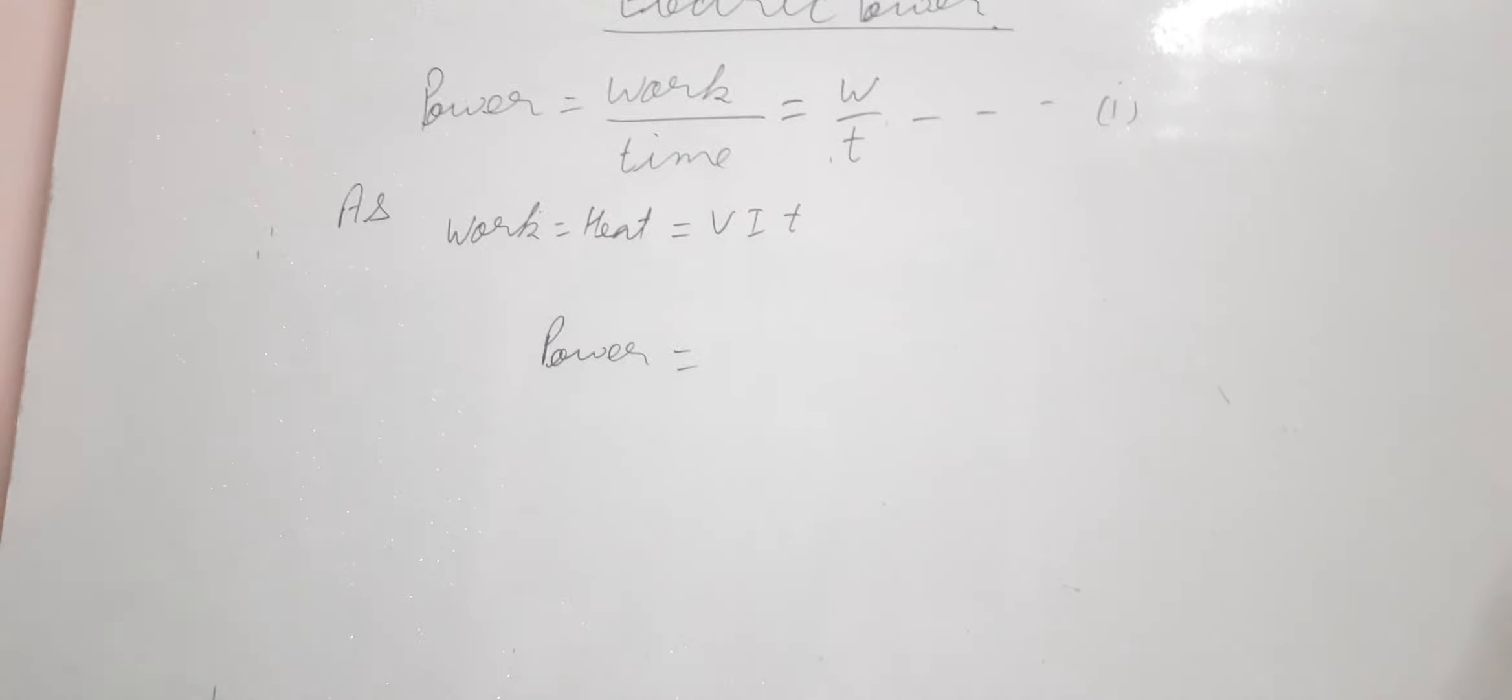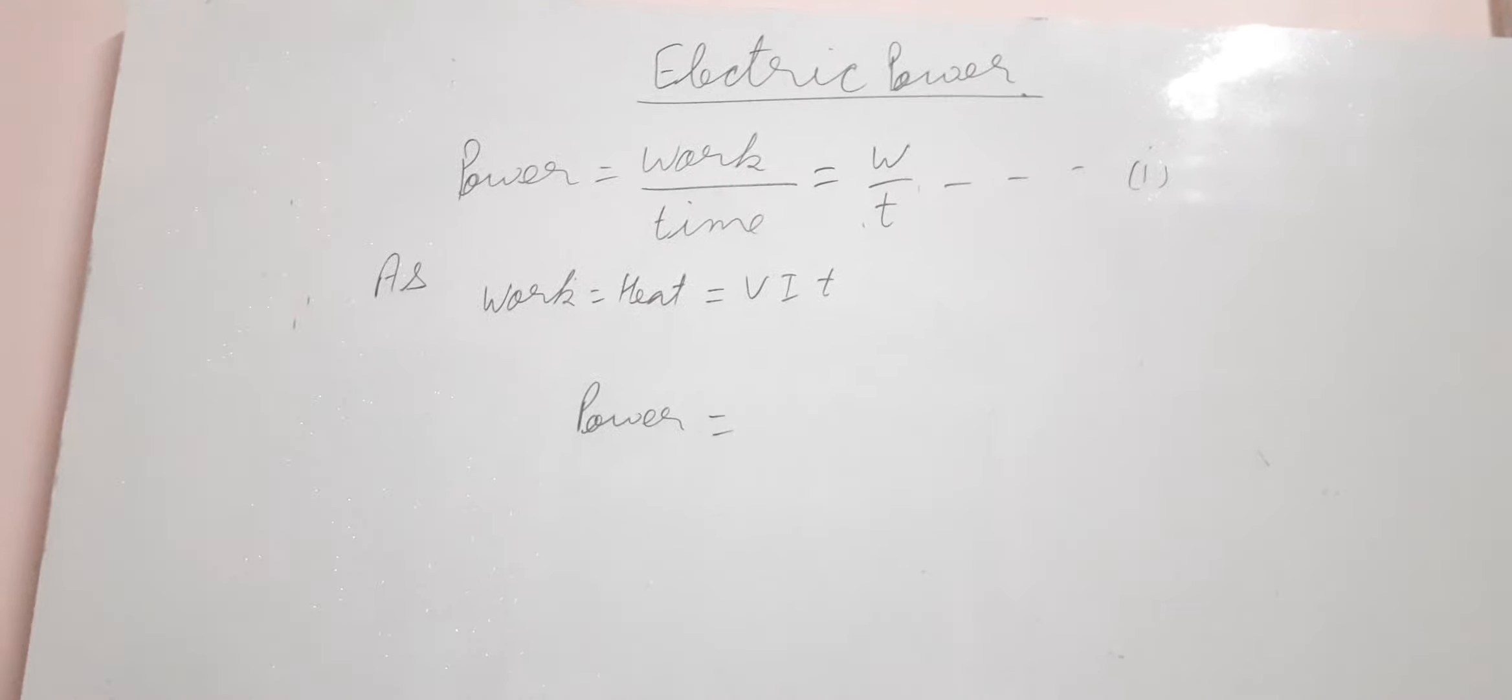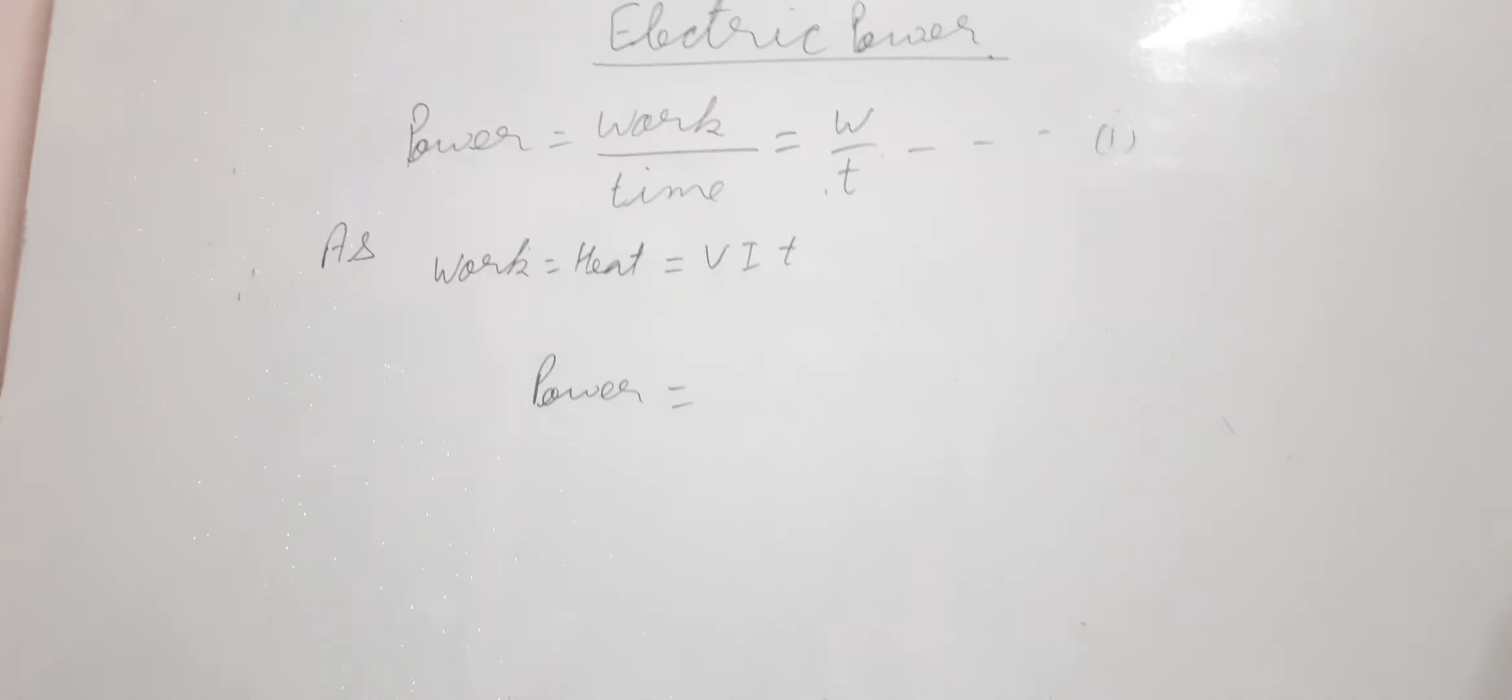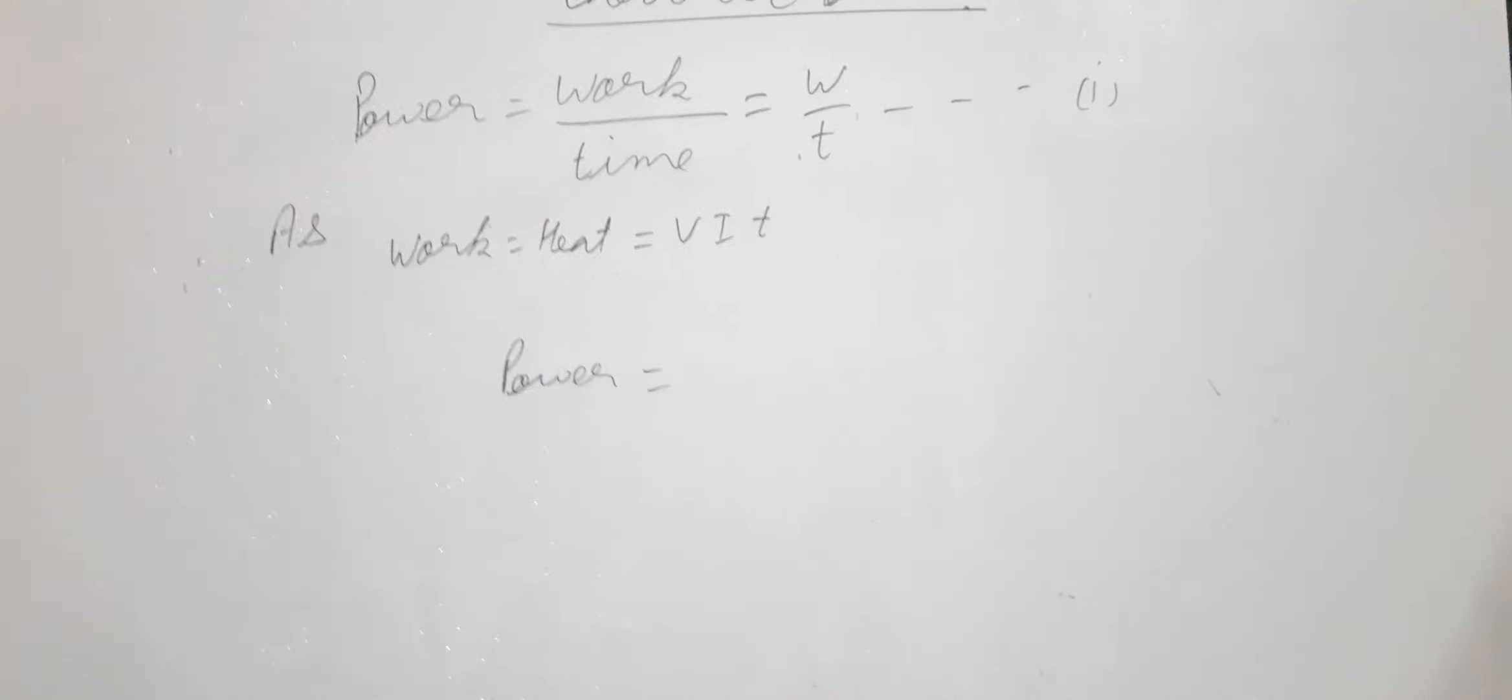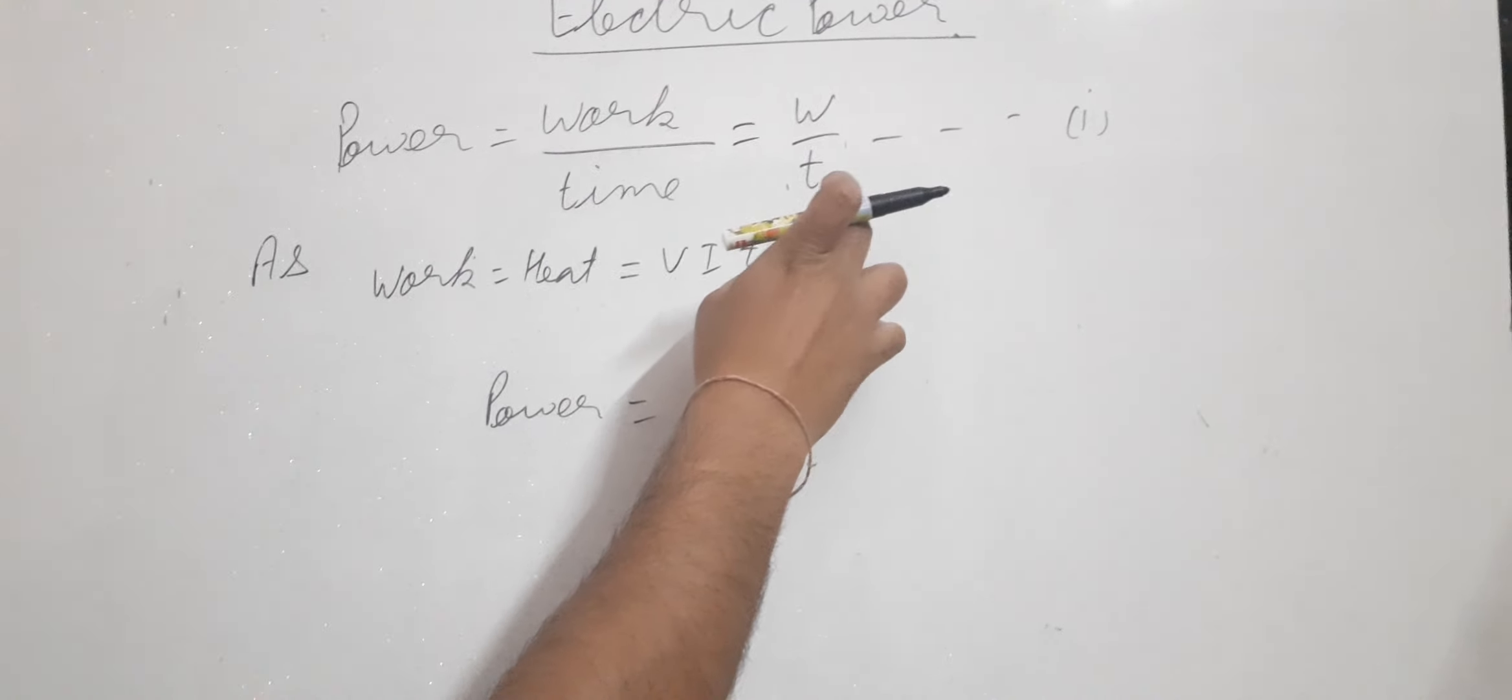The next concept is electric power. In class 9, you studied that power is the rate of supply of energy or the rate of doing work. In simple words, power equals work done upon time taken, P = W/T.